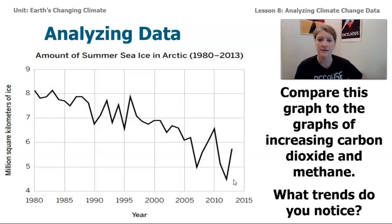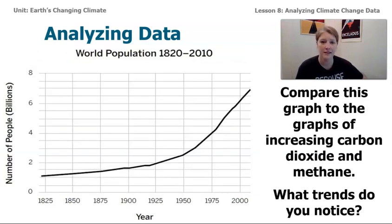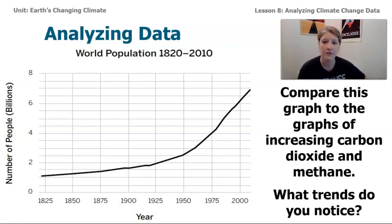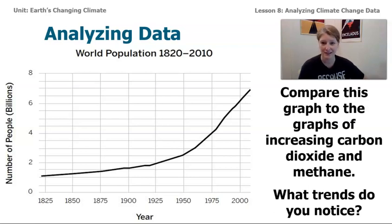Another thing that we looked at in the sim was the number of people on our planet. We saw that when the amount of people increased, the carbon dioxide and methane also changed. We can see that as carbon dioxide and methane have been increasing, the number of people has been increasing too. Although we found in the sim that even if population increases, if humans decrease the amount of combustion or livestock they're consuming, that can also make a difference.